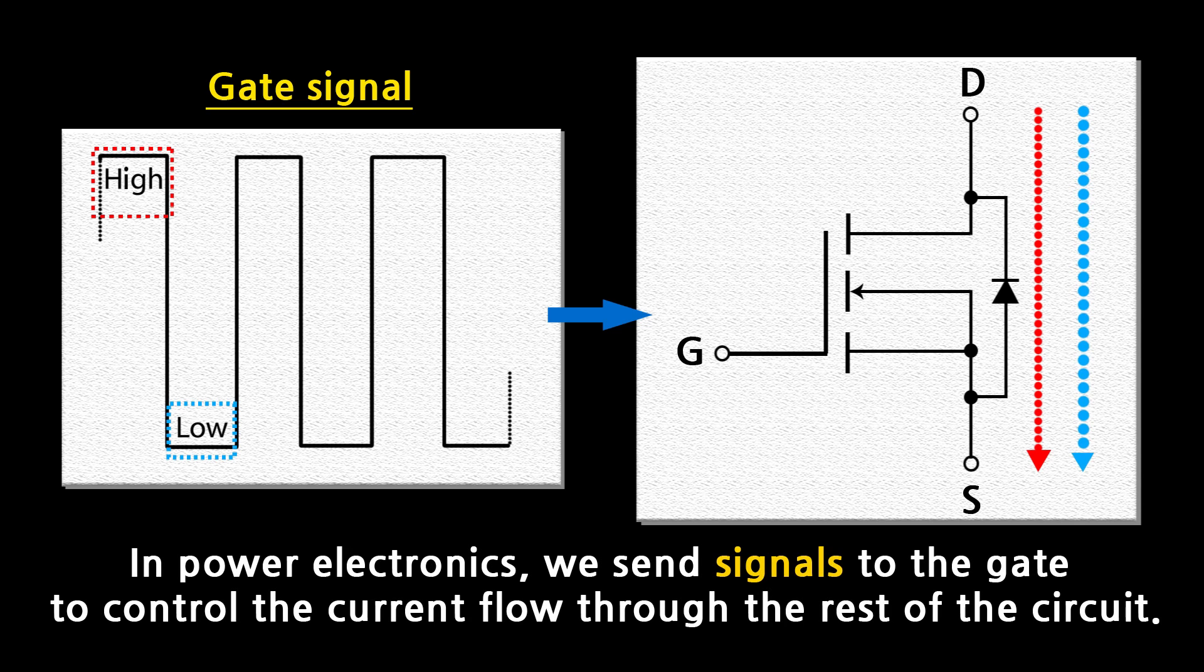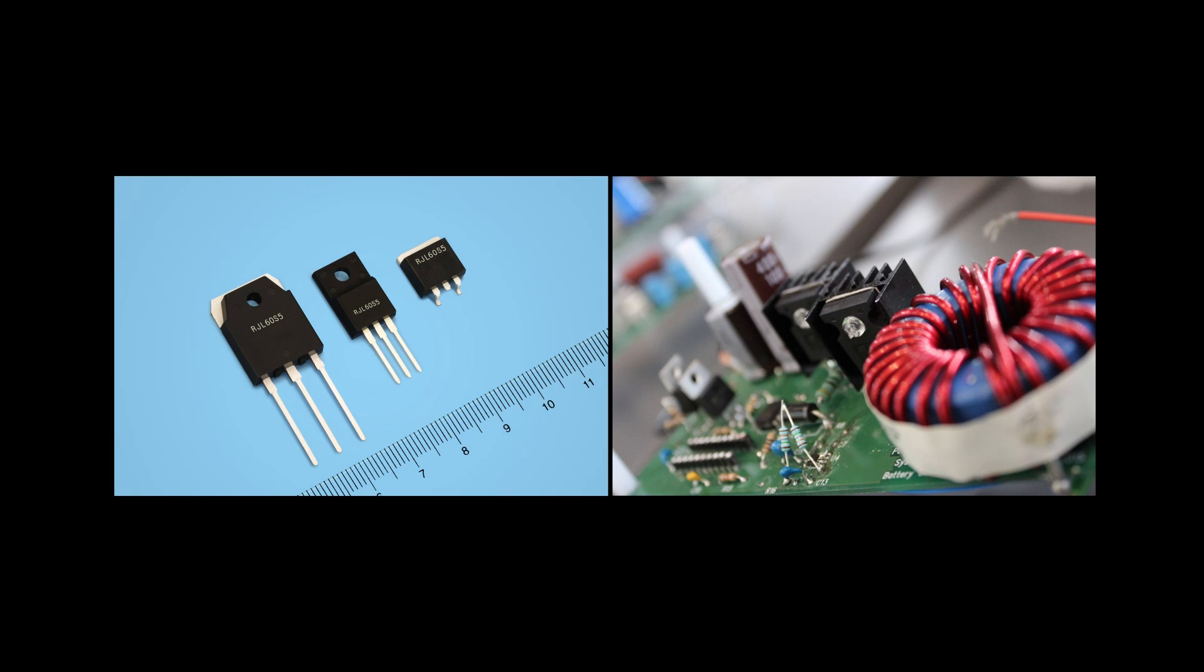In power electronics, we send signals to the gate to control the current flow through the rest of the circuit. MOSFETs are very commonly used in power electronic circuits.